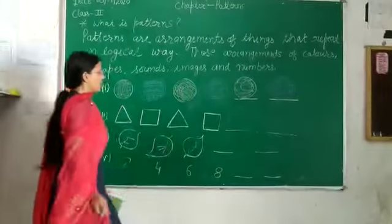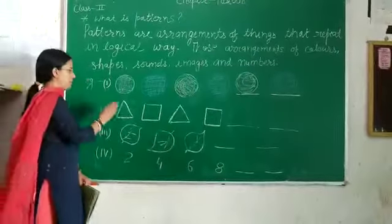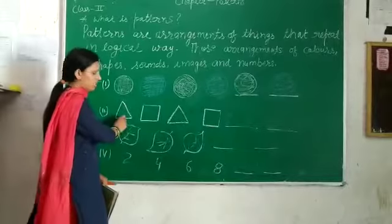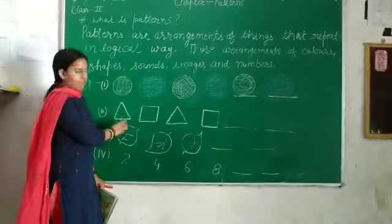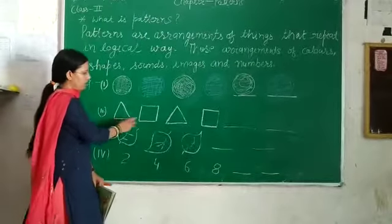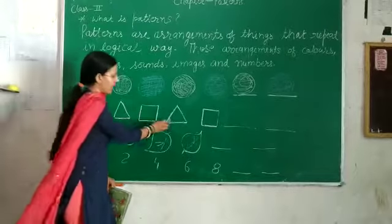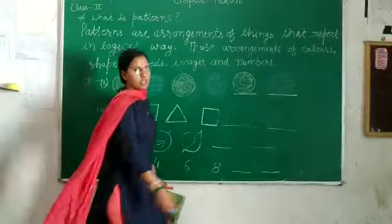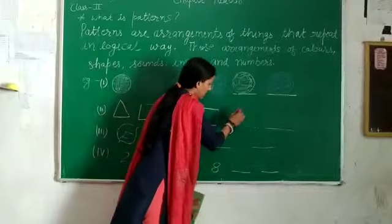Now another example: pattern of shapes. What figure? Triangle, square, triangle, square. What comes next? Triangle.